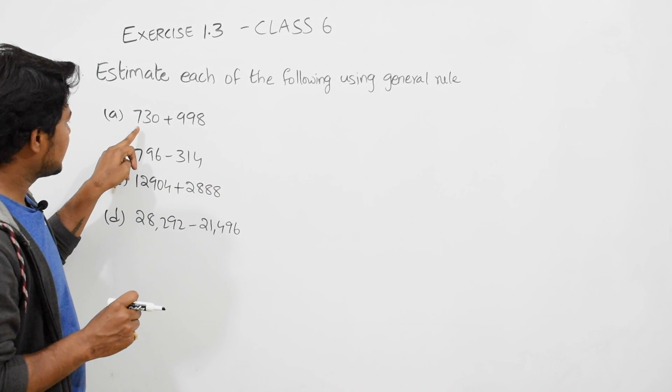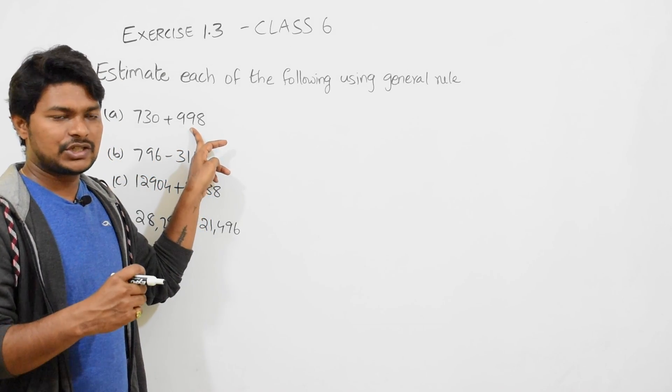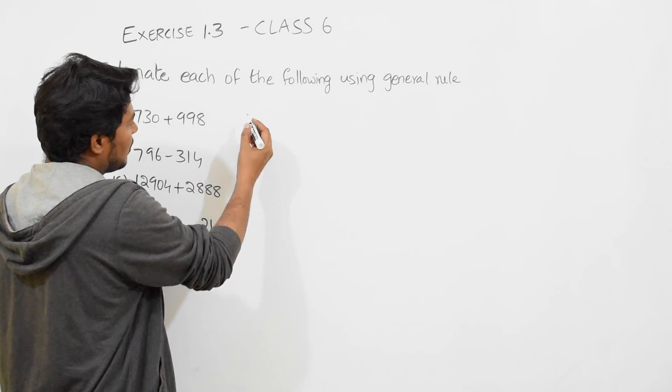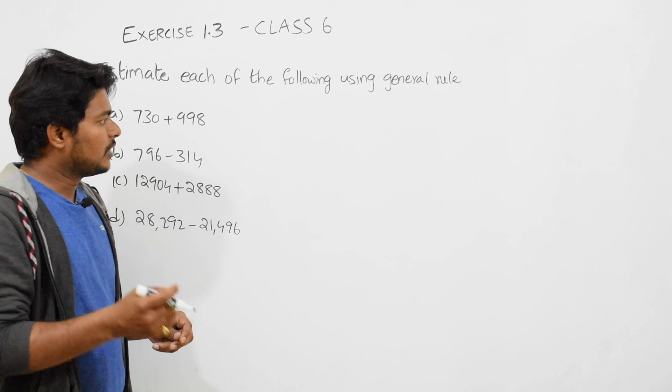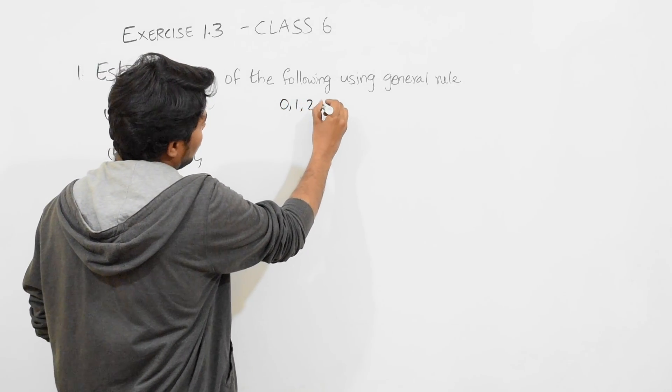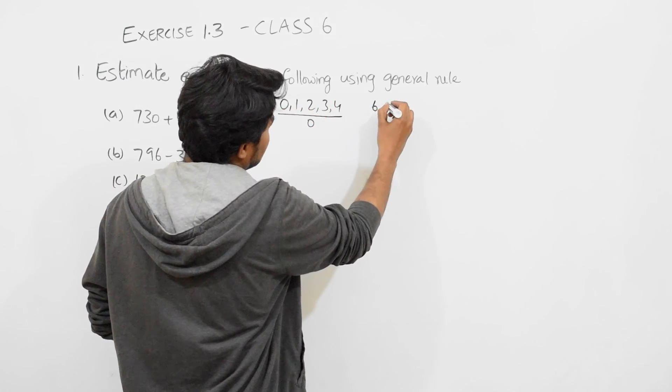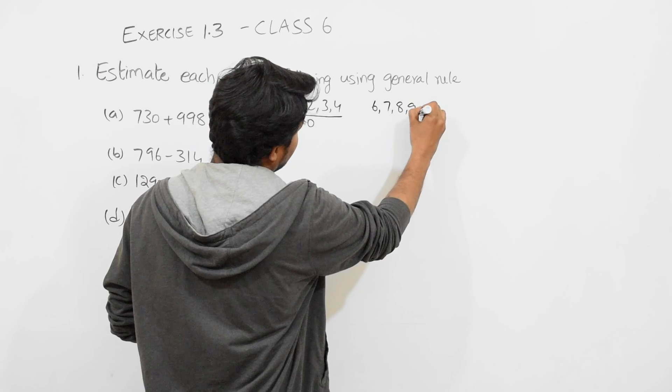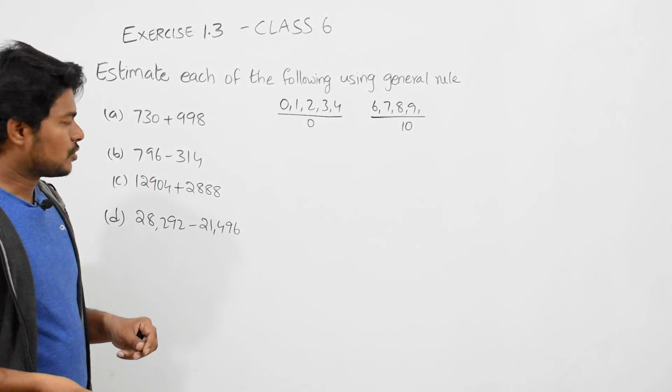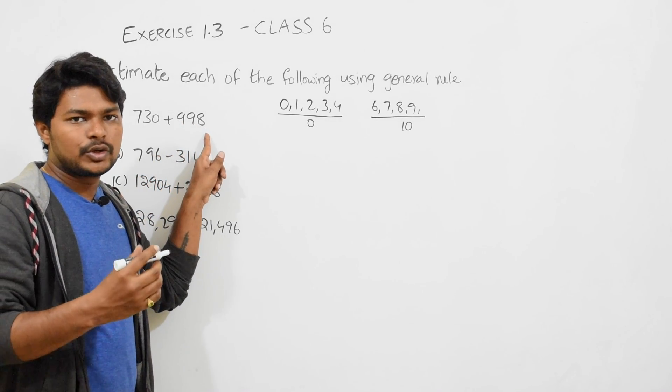The first one is estimate 730 plus 998. The best way to estimate is: when it is 0, 1, 2, 3, 4, you make it to 0. When it's 5, 6, 7, 8, 9, you estimate to the nearest next value which is 10. Here 998, you can estimate to 1000.